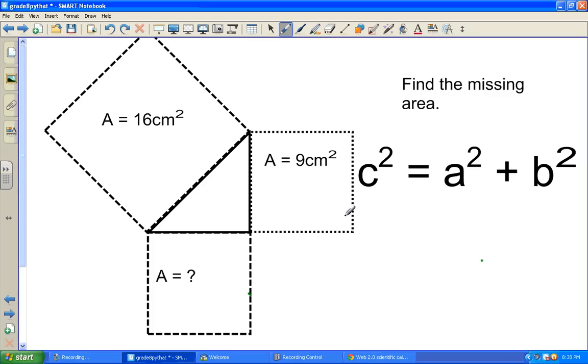In this one, we're given something a little different. We're given a right angle. There's our symbol there. And we're not given either of the sides. We're not given C squared.